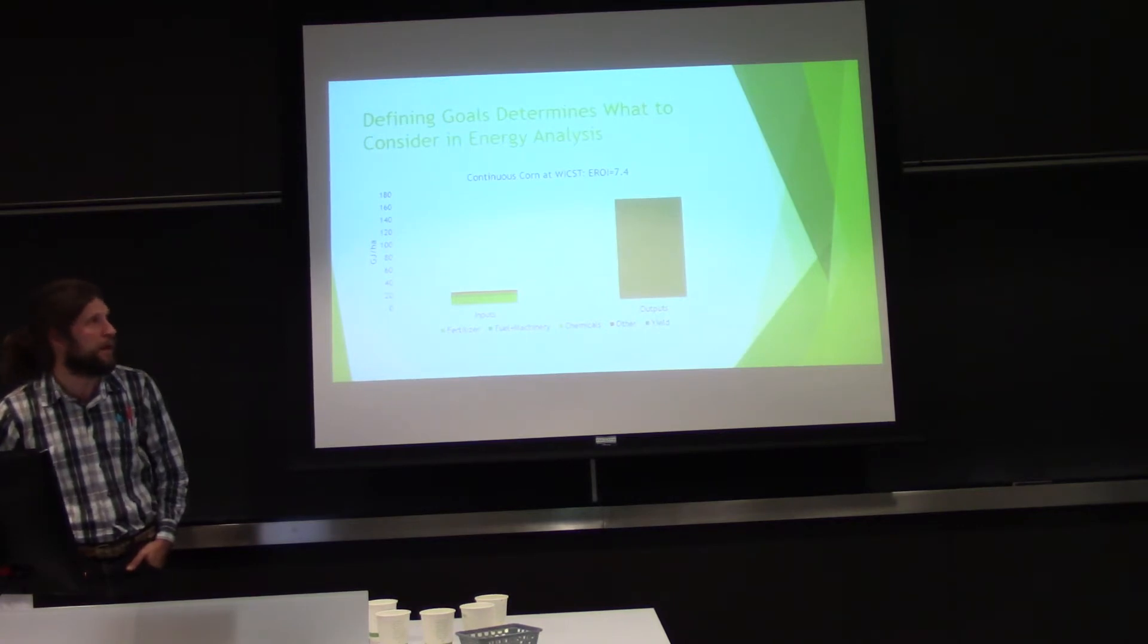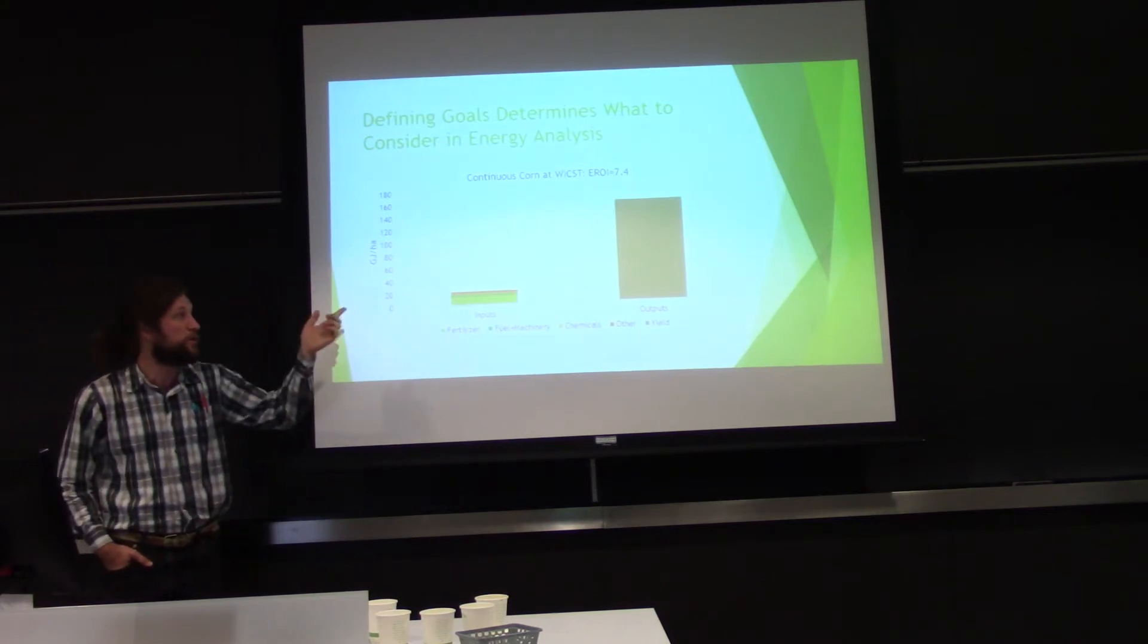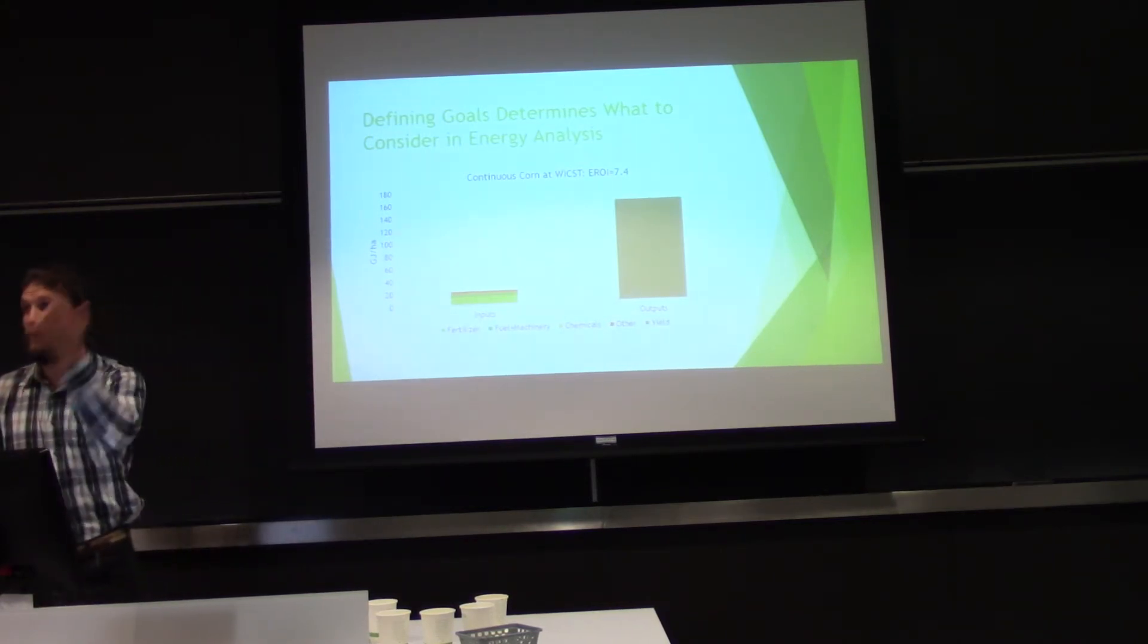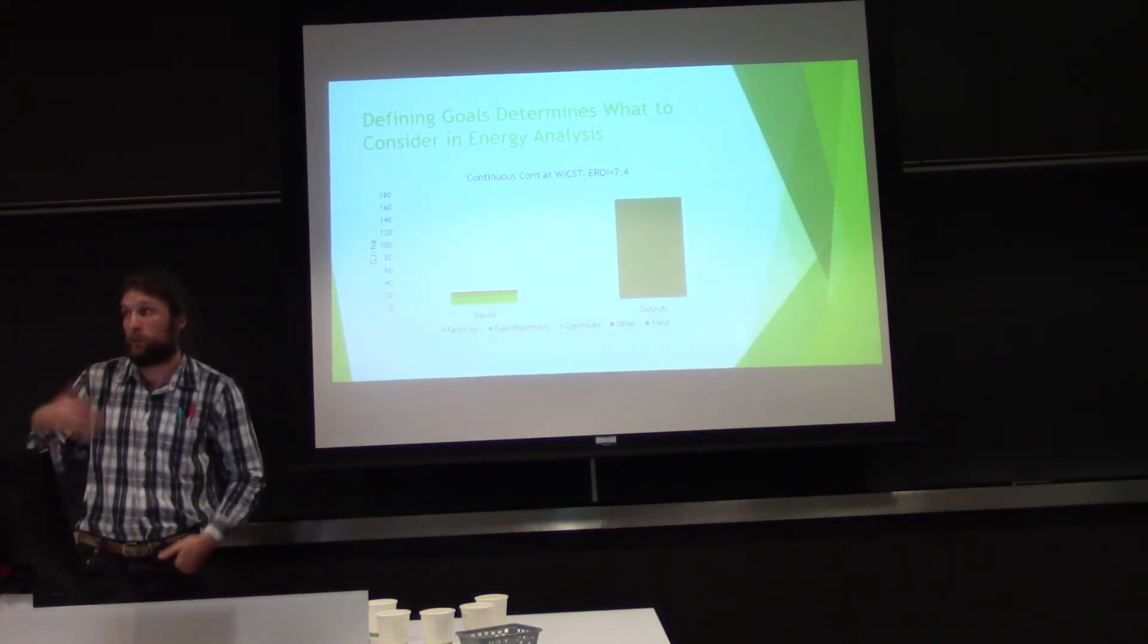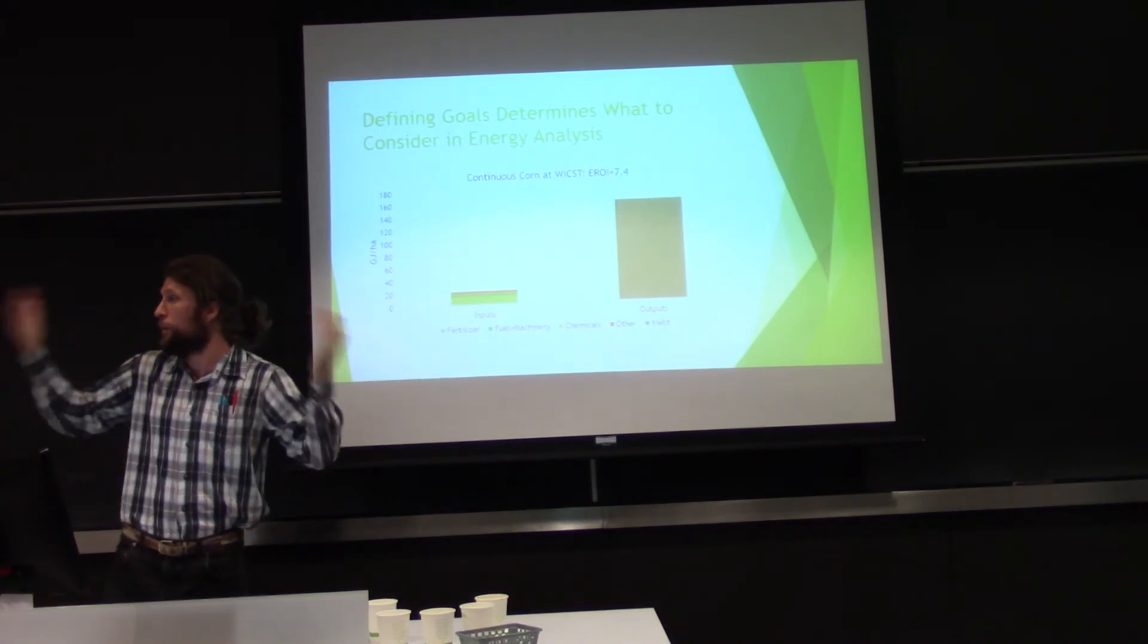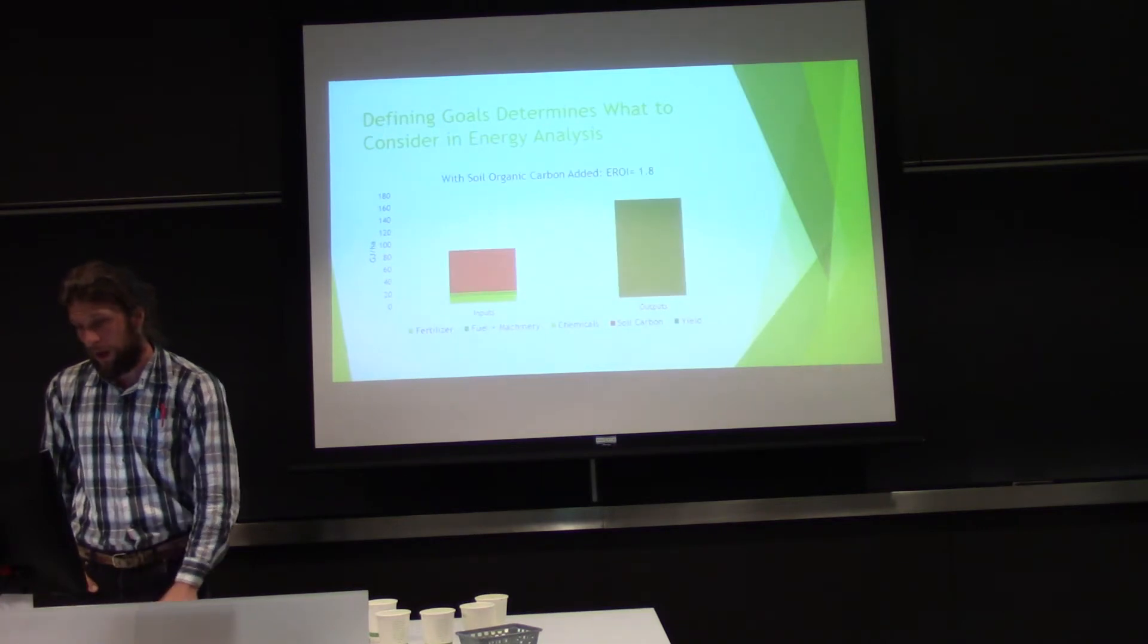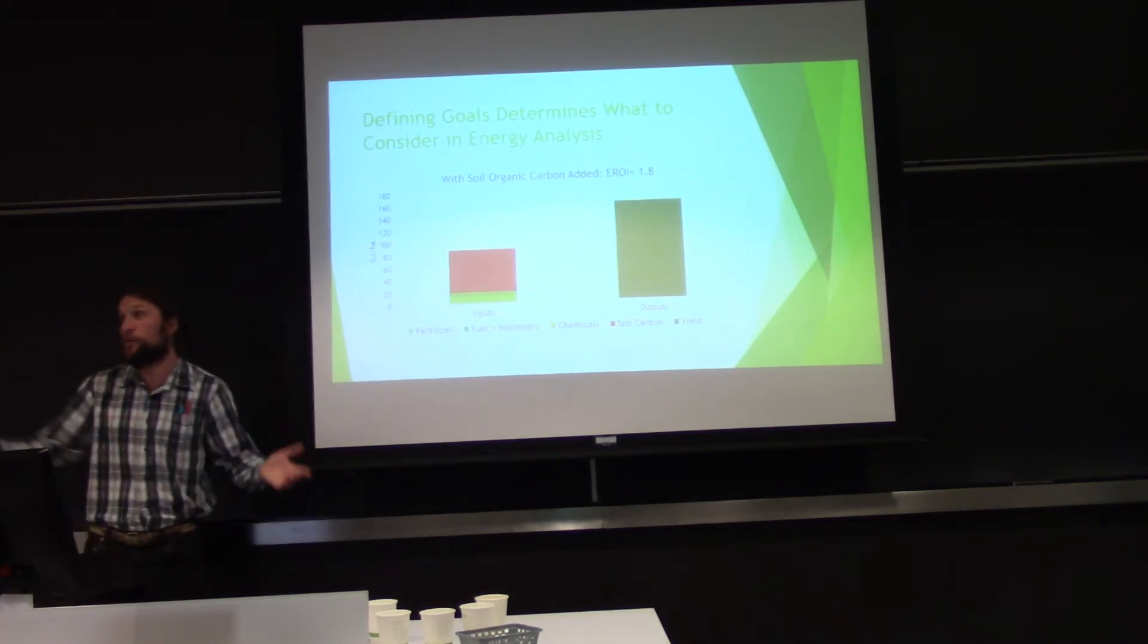So, this is data from a long-term agroecological trial, as in studying the ecology of agricultural systems in Wisconsin. This is a continuous corn conventional system that, because they're doing a really good job on it, is having seven units of corn out for energy out for every one unit of energy put in, which is not typical. It seems like a really highly efficient system. And if you did this with bioethanol, you might say, oh, wow, we're producing a lot of energy. We can feed our cars with it, and that's great.